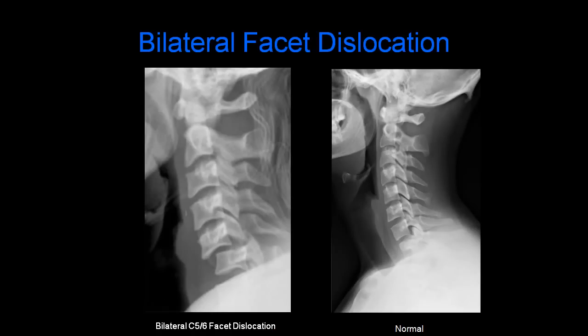On the left, we have a radiograph of bilateral C5-6 facet dislocation. We can see anterior subluxation of C5 on the C6 vertebral body. When we look at the posterior elements at the C5-6 level, they look like a bow tie — this is called the bow tie sign. On the right, we have a normal radiograph.